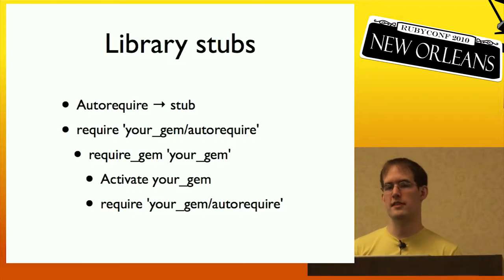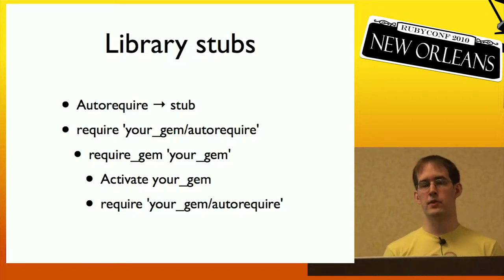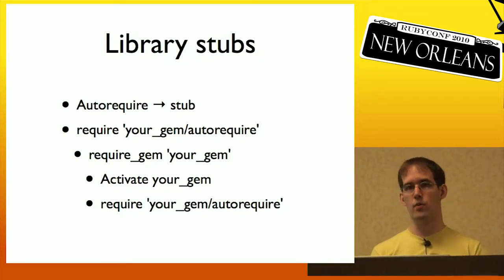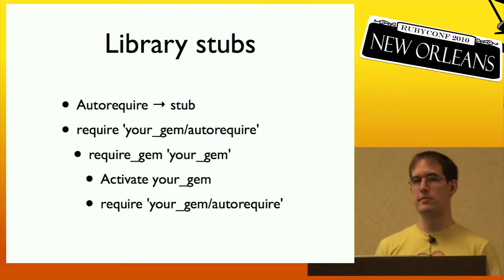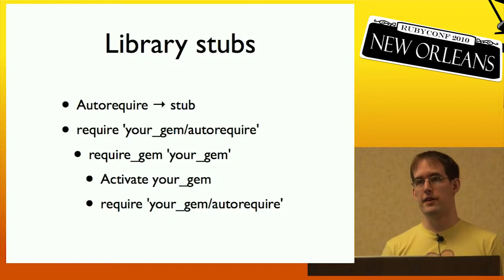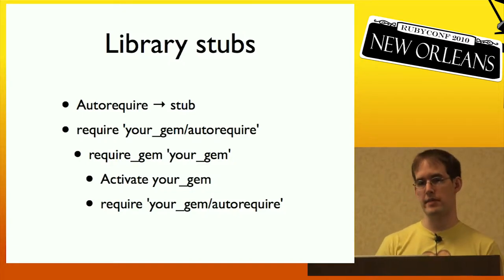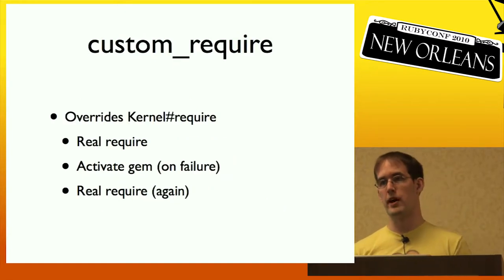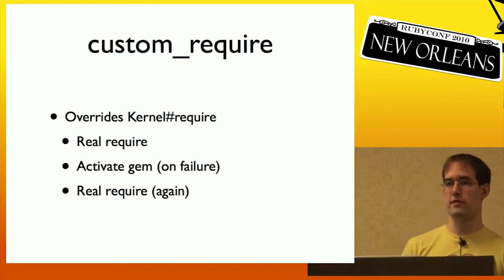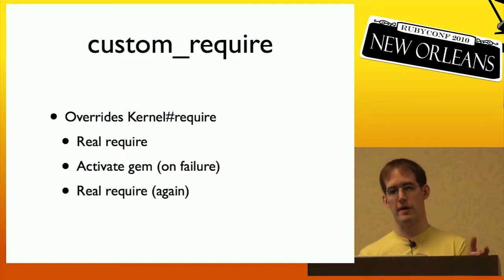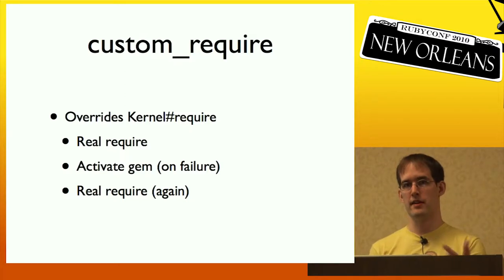This still had some problems. You could only have one active version, and there were problems if you had multiple gems having the same file — there could be conflicts. So custom-require replaced this. Custom-require overrides Ruby's require: first it does a real require through the whole load path. If the gem isn't there, it rescues the exception, activates a gem that has that file, and then runs through the same process again.